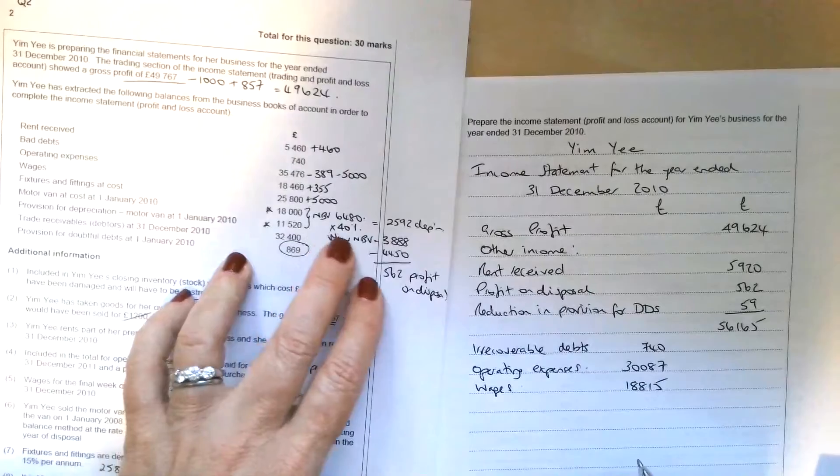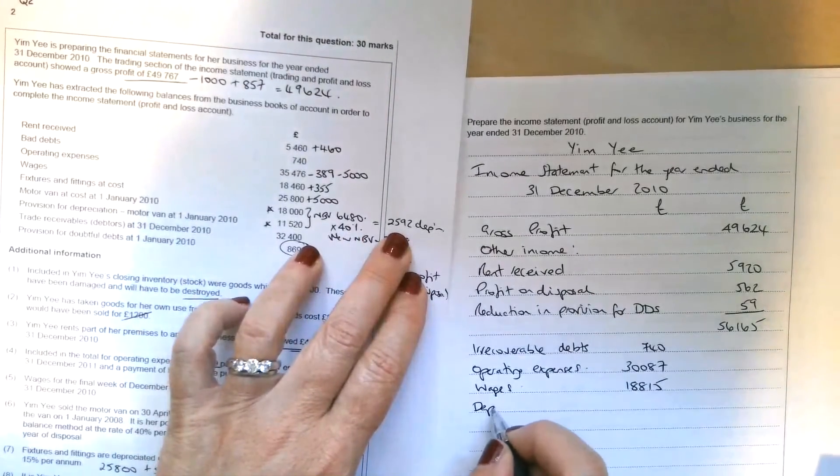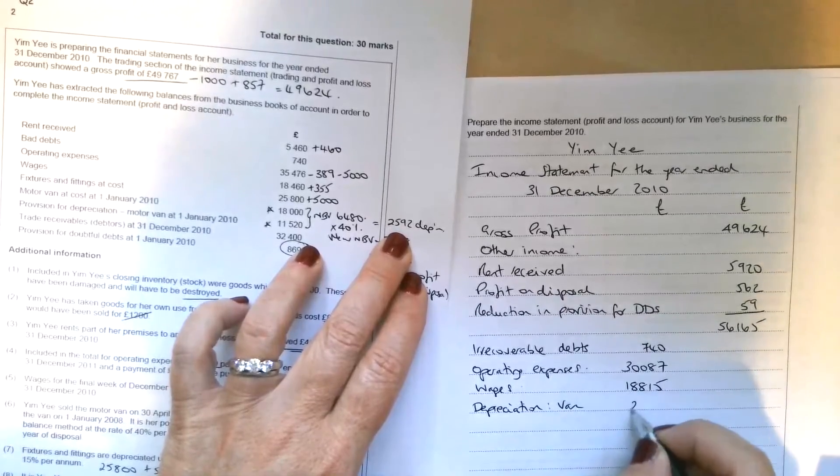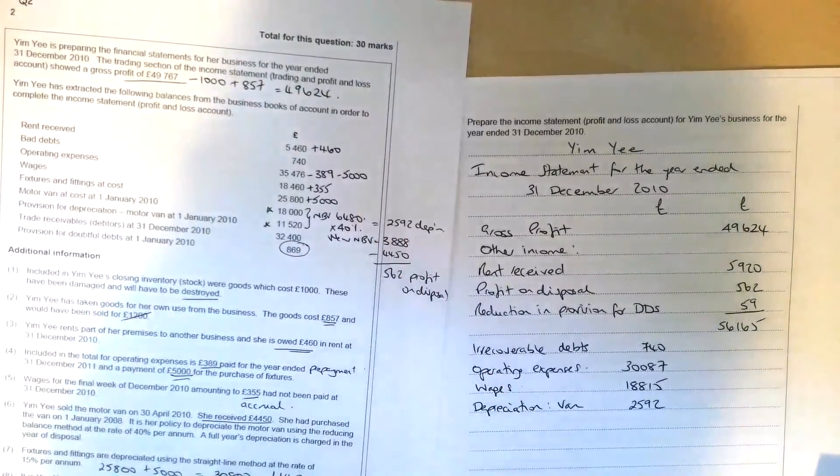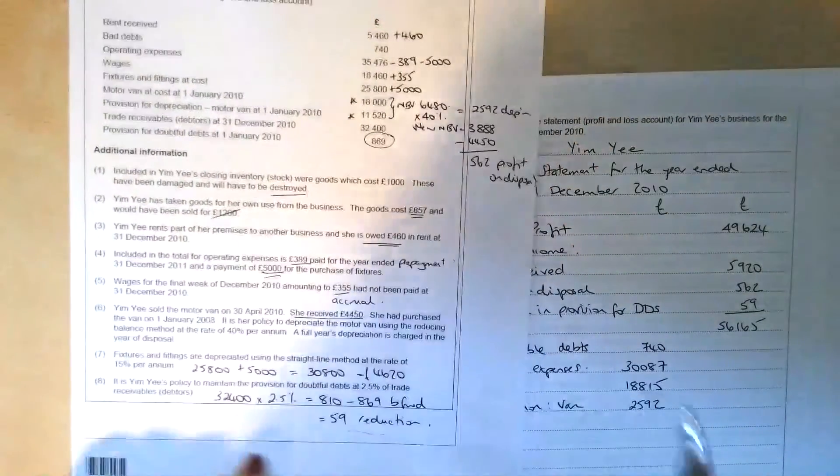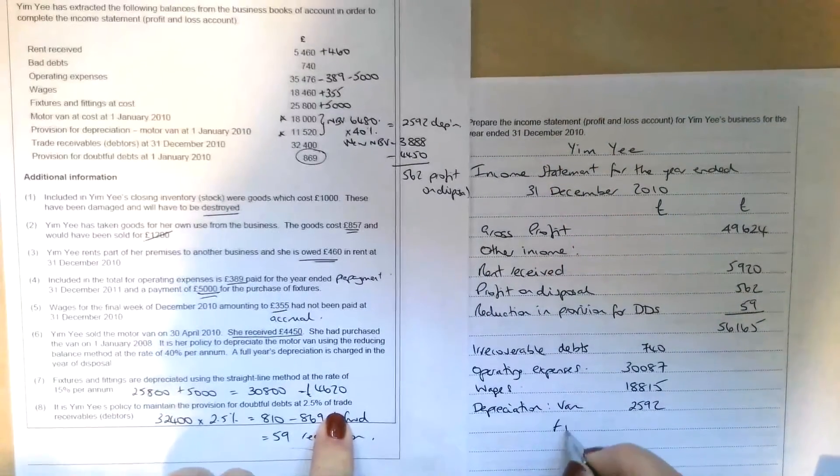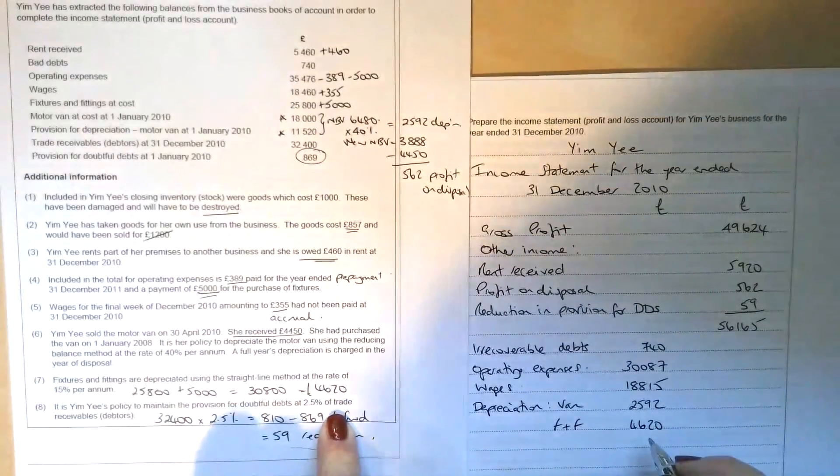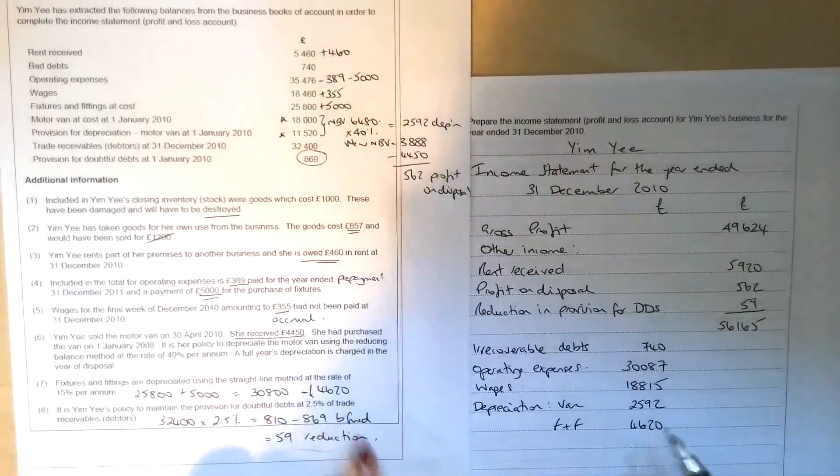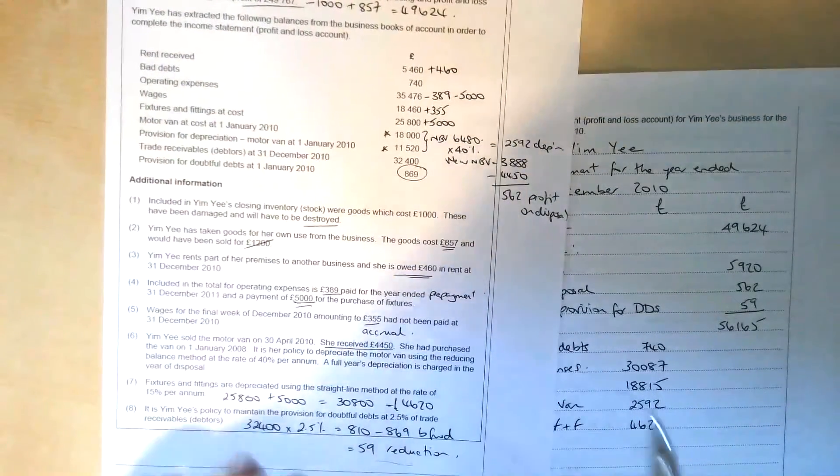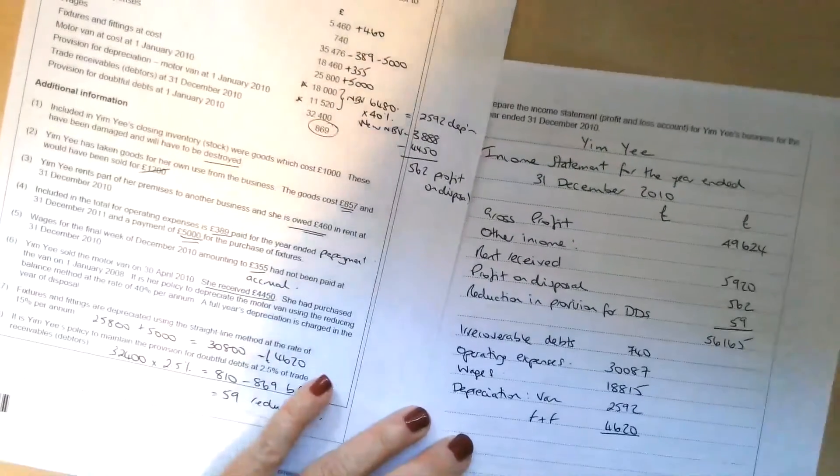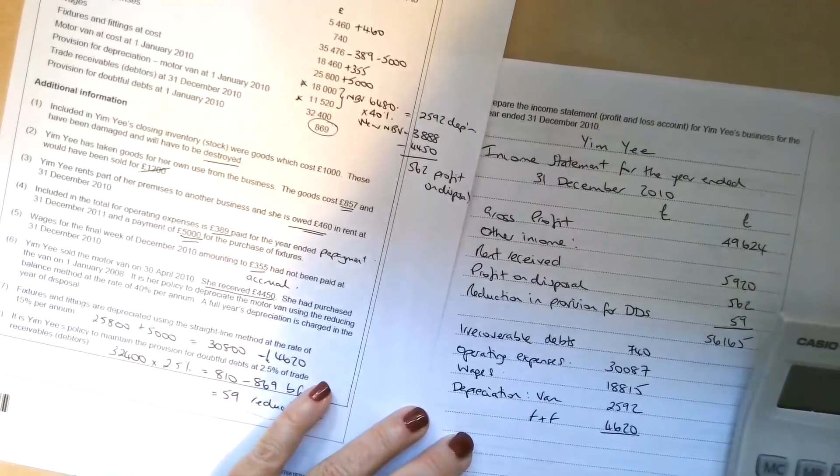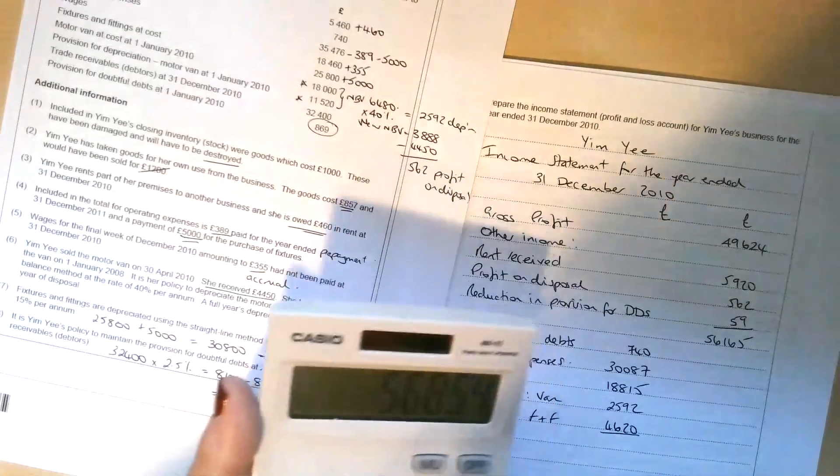Then we've got some depreciation on the van. So depreciation on the van is £2,592. And we also had some depreciation on the fixtures and fittings. That was £4,620. I'm just going to write F&F in the interest of speed. So £4,620 there. And I think that's everything. I don't think there are any other expenses, nothing else we need to do. So we can just tot those up. £30,087, £18,815, £2,592, £4,620, £56,854.